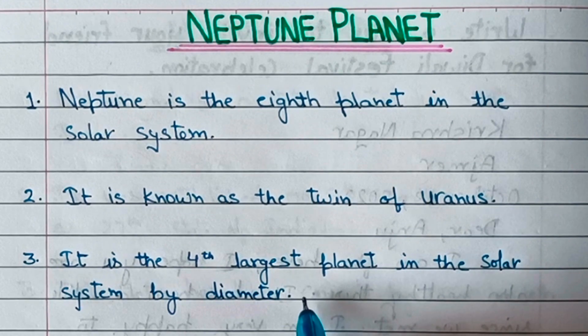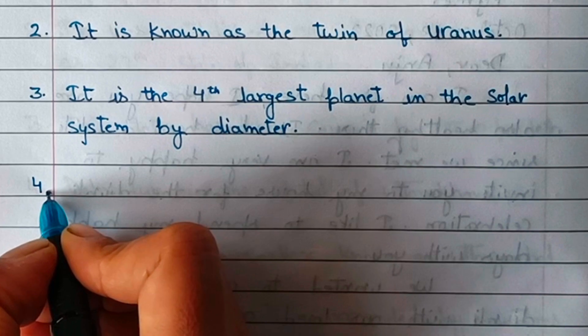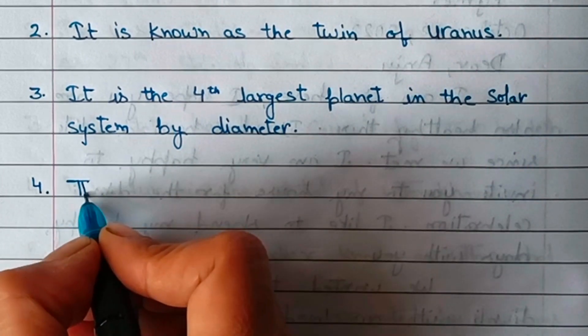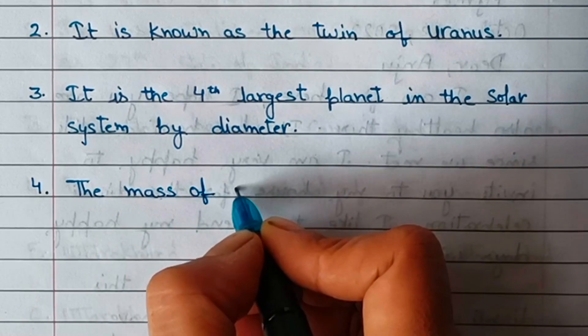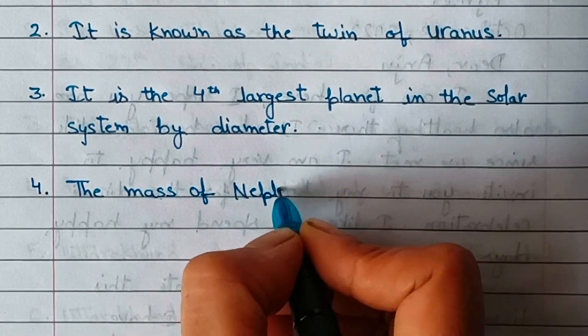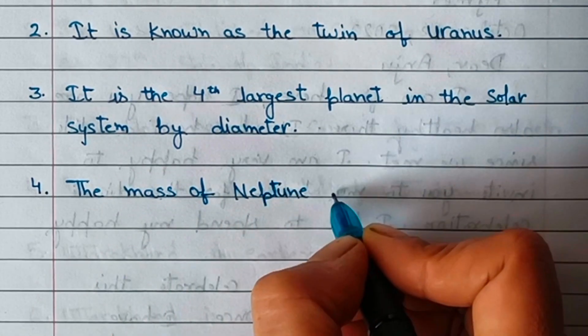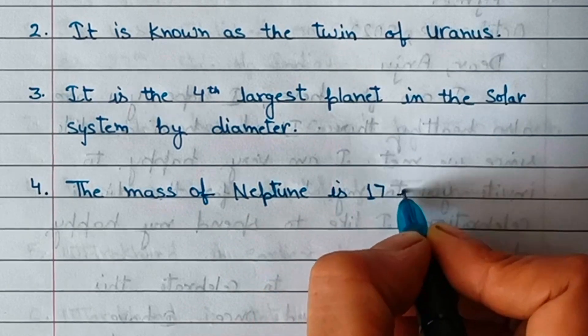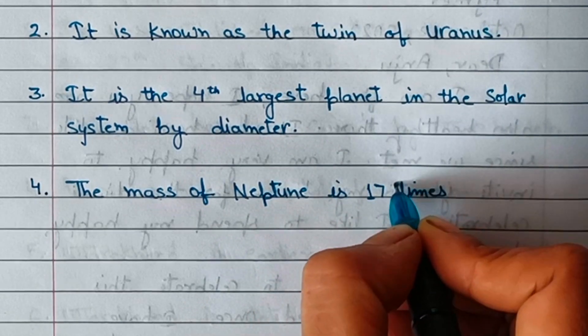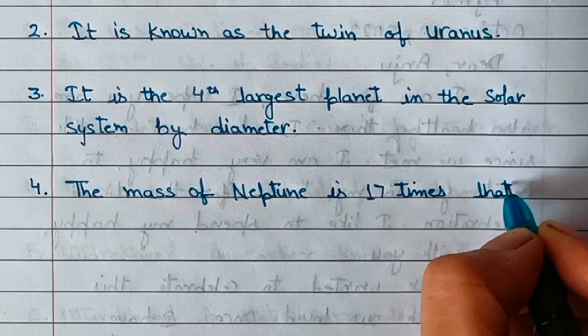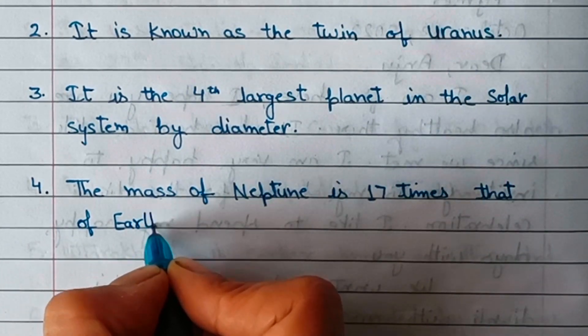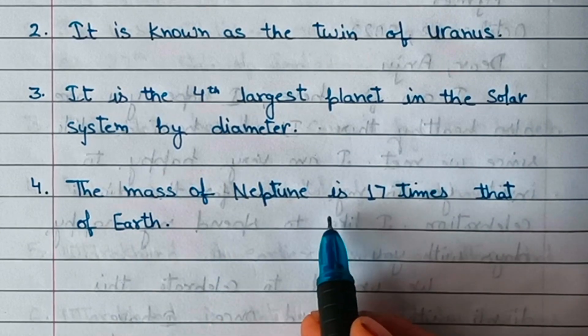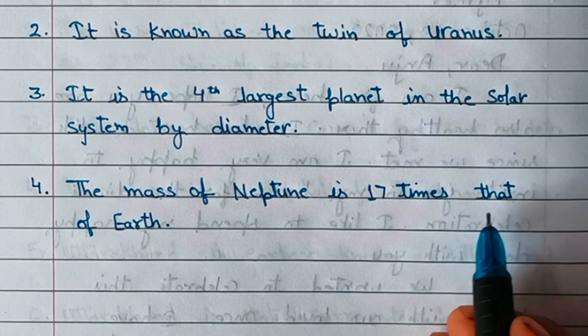It is the fourth largest planet in the solar system by diameter. The mass of Neptune is 17 times that of Earth.